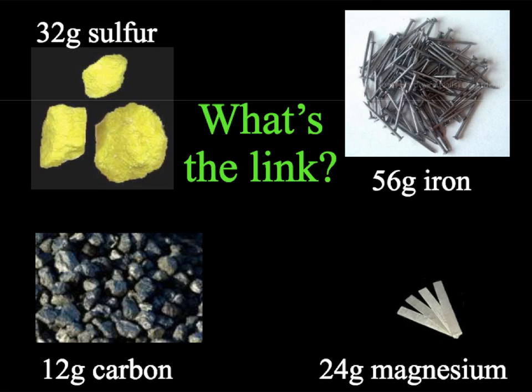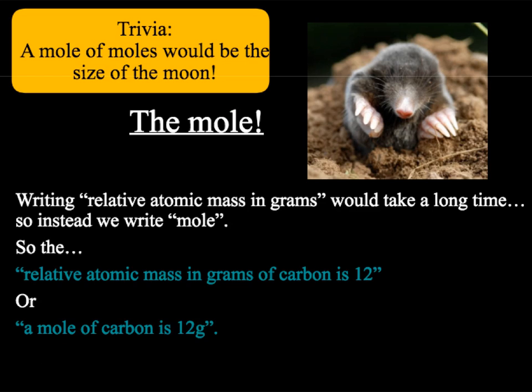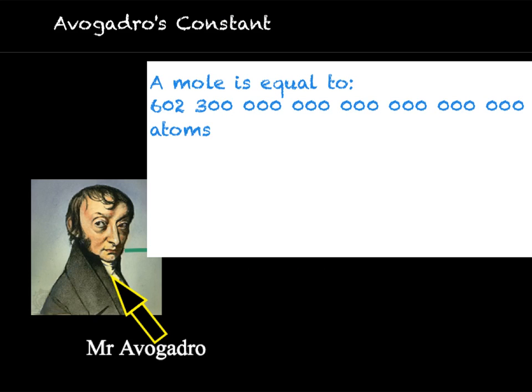So the mass of one mole of sulfur would be 32 grams, and the mass of one mole of iron would be 56 grams. So instead of writing out relative atomic mass in grams, we write mole. The relative atomic mass in grams of carbon is 12, therefore a mole of carbon is also 12 grams.